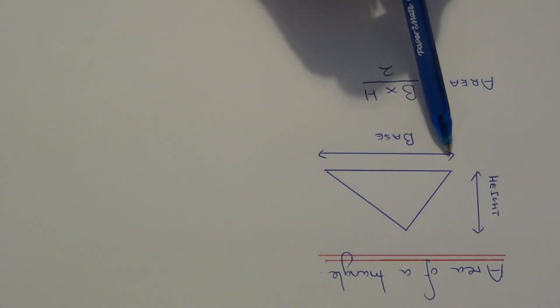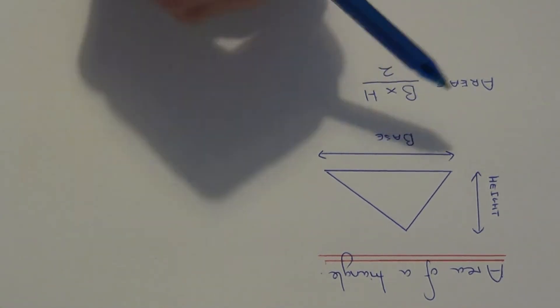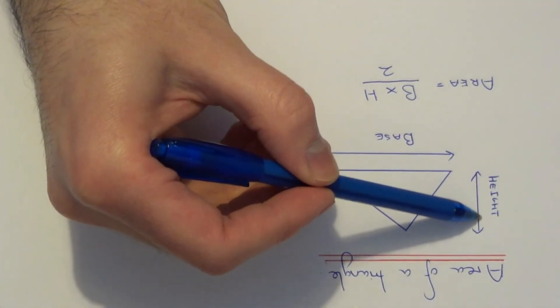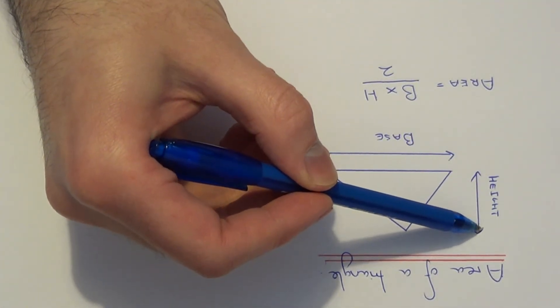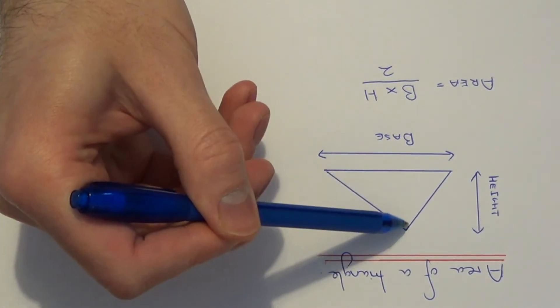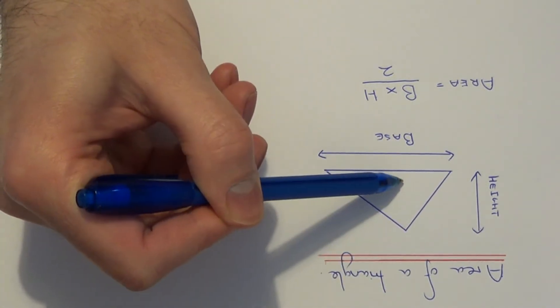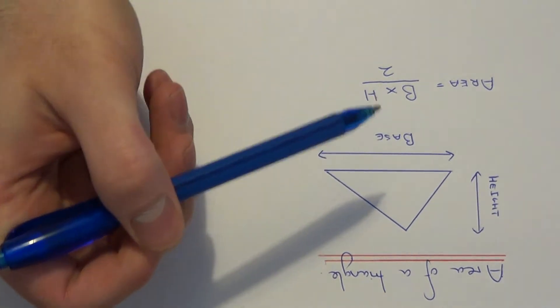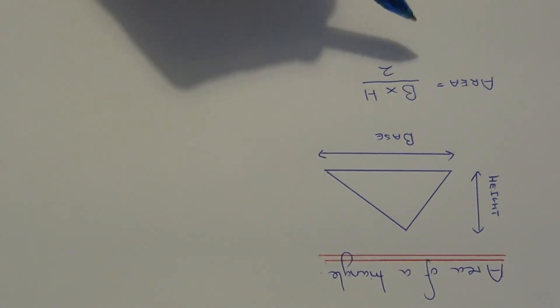If you have a triangle with a base length and perpendicular height—the height from the bottom to the top of the triangle at right angles to the base—all you need to do is use the formula: base times height divided by 2. This will give you the area of the triangle.